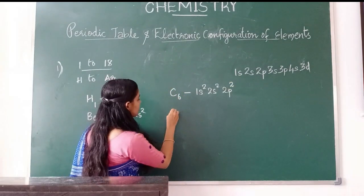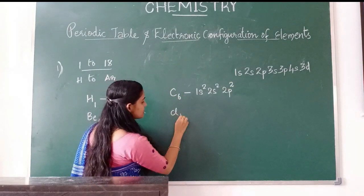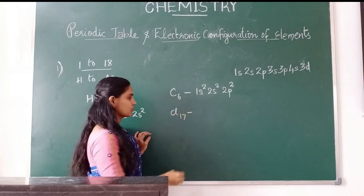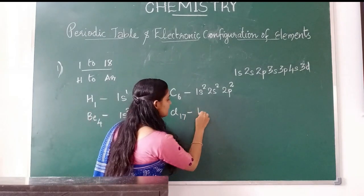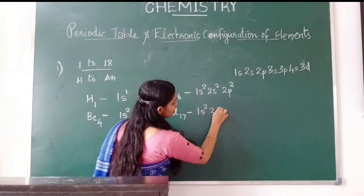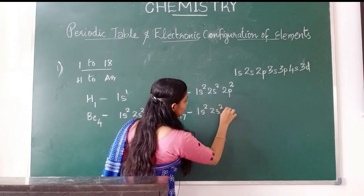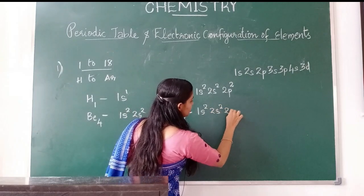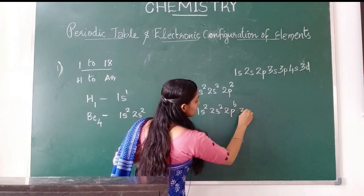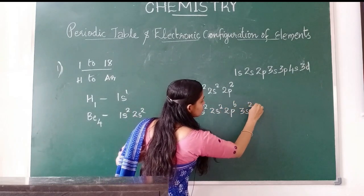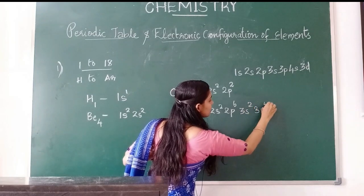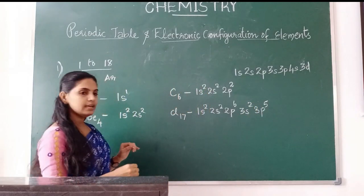Then chlorine, atomic number 17. Its electronic configuration: 1s2, 2s2, 2p6, 3s2, 3p5.